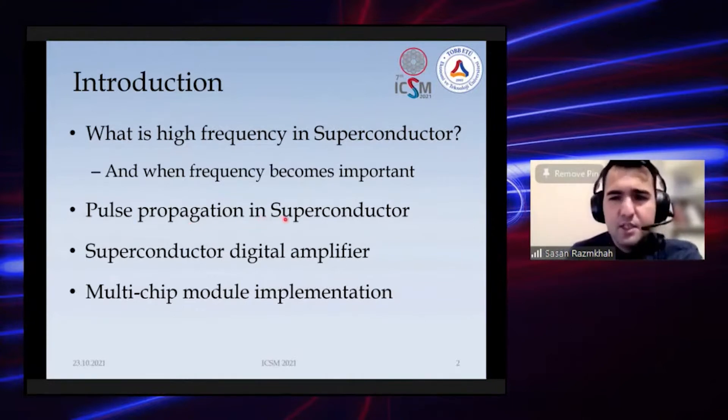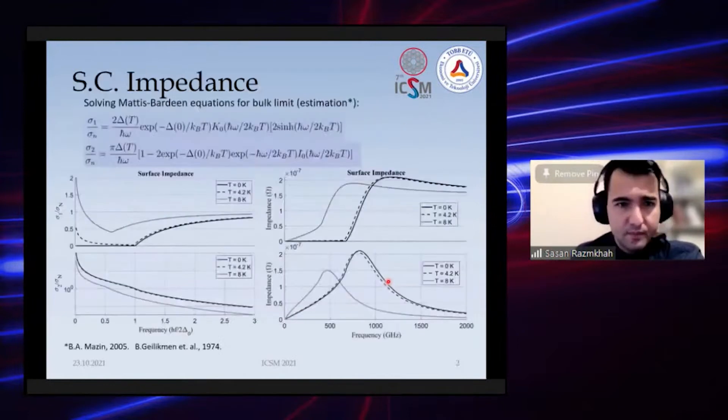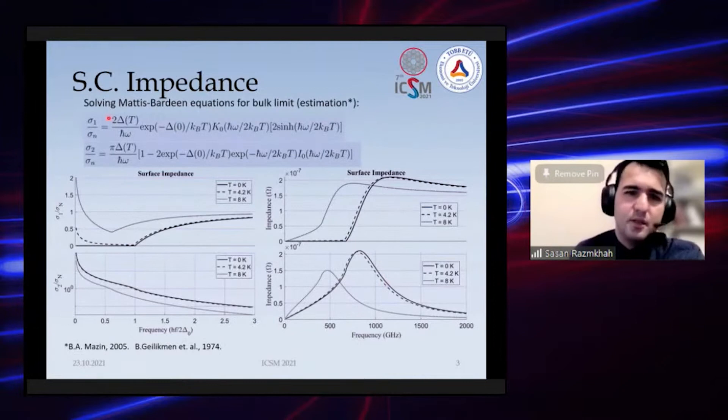I'll show you how we model pulse propagation in superconductor strip lines, coplanars, and transmission lines, then the digital amplifier and how we use these models to make pulses go from one chip to another without losing any data.